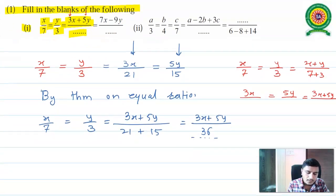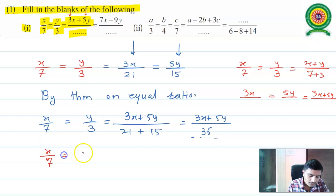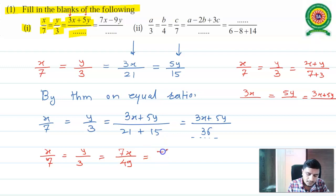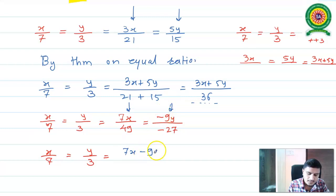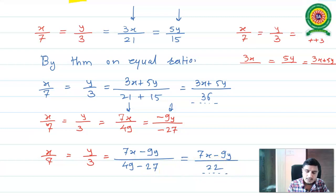Same for 7x-9y. We need coefficients 7 and -9 for variables x and y respectively. So multiply and divide the first ratio by 7: 7x/49, and multiply and divide the second ratio by -9: -9y/(-27). By theorem on equal ratio, we get (7x-9y)/(49-27). Simplifying: 49-27 = 22. So the next fill in the blank is 22.